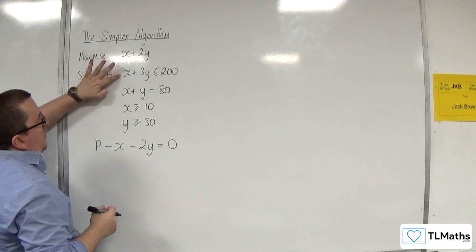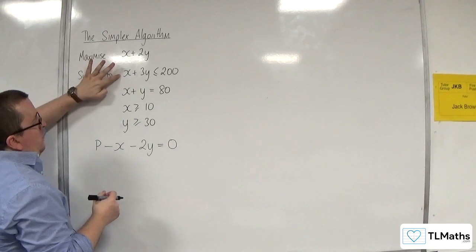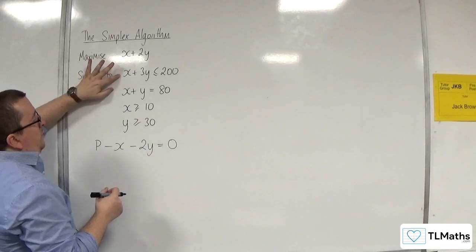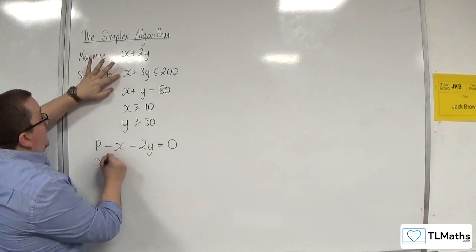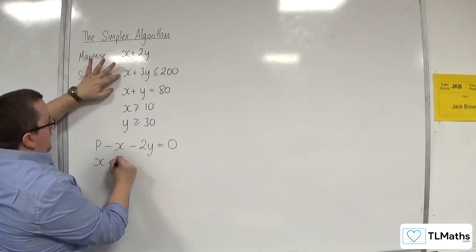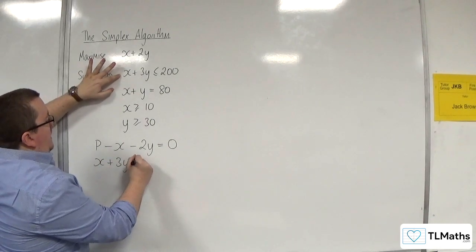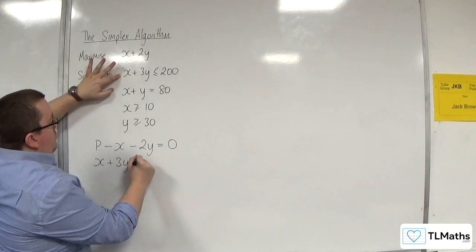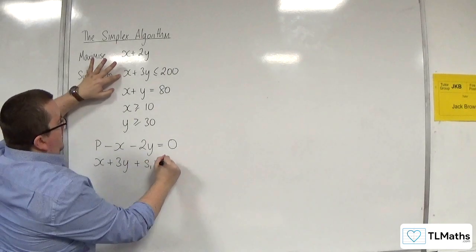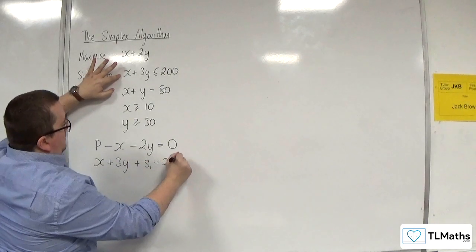Now this first inequality: x plus 3y is less than or equal to 200. We know how to deal with that because we need to add on a slack variable to make it up to 200.